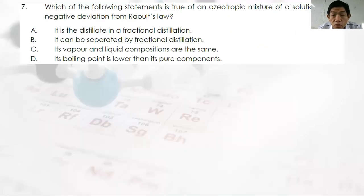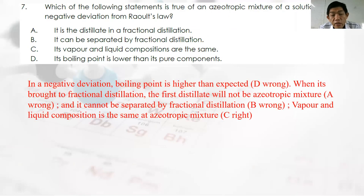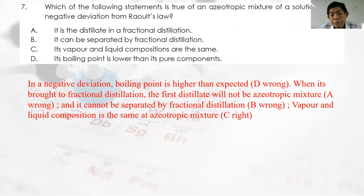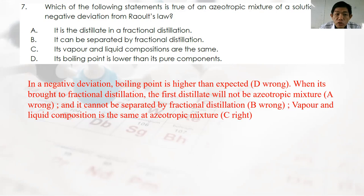Question 7: Which statement is true about azeotropic mixture for a solution with negative deviation from Raoult's Law? In negative deviation, the boiling point is higher than expected. In fractional distillation, the first distillate will be either pure X or pure Y, not the azeotropic mixture — unless you start from the azeotropic mixture itself. The azeotropic mixture cannot be separated by fractional distillation. Inside the azeotropic mixture, the liquid and vapor composition are the same. Best answer: C.